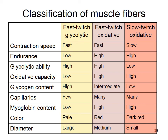Fiber diameter determines contraction strength. Fast twitch glycolytic fibers, when trained, are large in diameter with loads of actin and myosin — they develop a lot of tension. Fast twitch oxidative fibers are medium diameter. Slow twitch oxidative fibers are small in diameter — they can sustain contraction but don't develop intense tension.